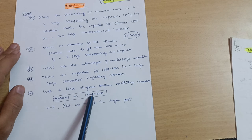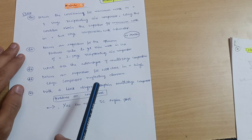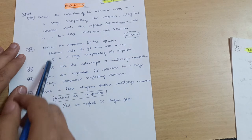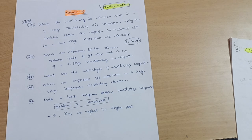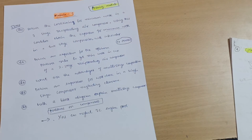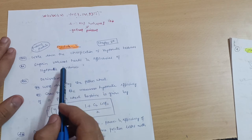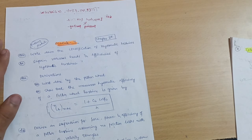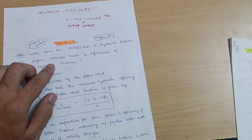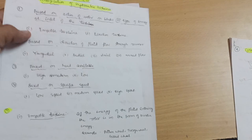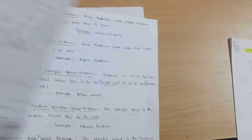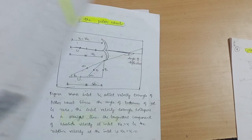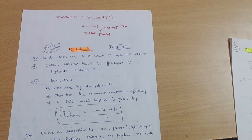For problems, you should refer to ATD — Applied Thermodynamics — with subject code 18ME42. Try to collect those previous question papers and practice problems on compressors so you can easily get 10 to 15 marks from this module. This is all about Modules 3 and 1. Now let me discuss Module 4, which is again a passing module. You have to cover: write down the classification of hydraulic turbines, explain various heads and efficiencies of hydraulic turbines. I already have notes on this — here are the classifications of hydraulic turbines, efficiencies, and some derivation parts.